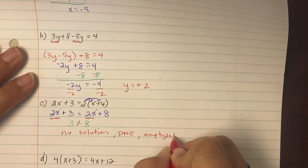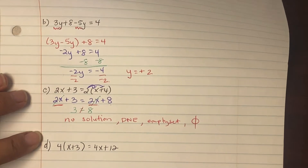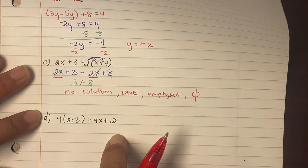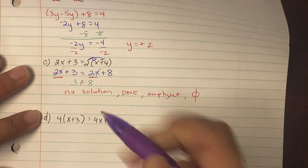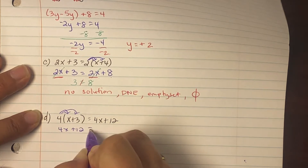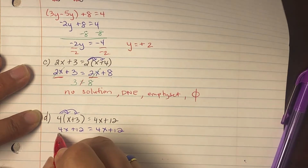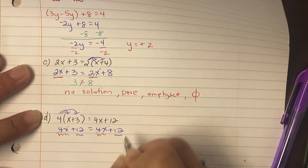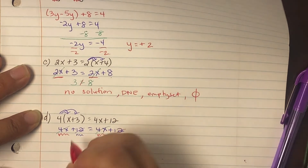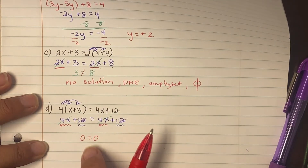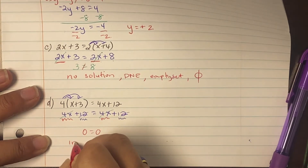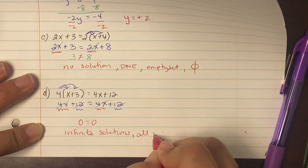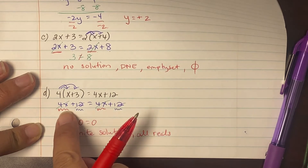On example D it says four times the quantity x plus three equals four x plus twelve. The left side needs to be distributed with the four, giving four x plus twelve equaling four x plus twelve. The four x terms cancel each other out, and the twelves also cancel, leaving zero equaling zero. When you see zero equaling zero — or one equaling one, or any number equaling itself — this is known as infinite solutions, or all reals, because any number you plug in for x will make both sides equivalent.